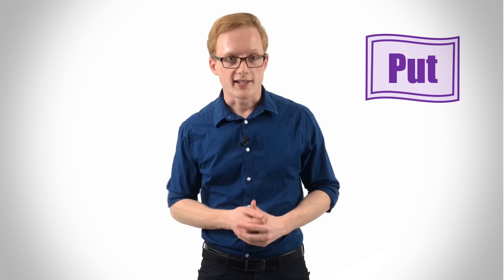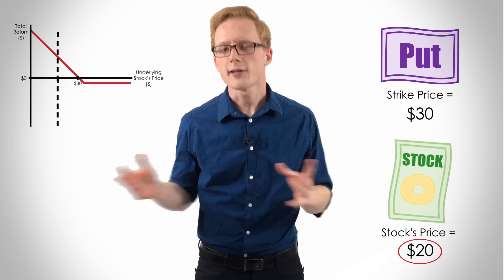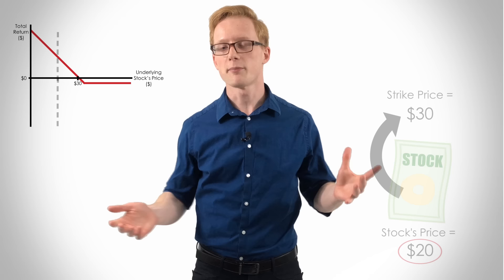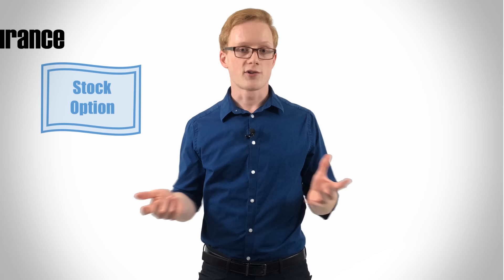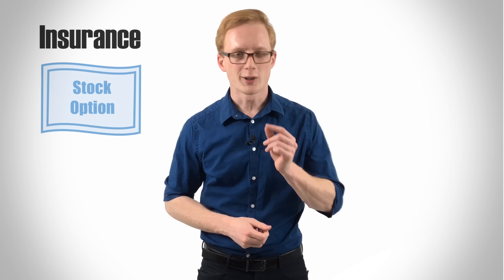Puts work in a similar manner, but since they entail the right to sell a security, the graph is actually flipped. If a stock's price falls below the strike price, you could buy a share at the lower market price and exercise the put to sell a share at the higher strike price, making a profit while again limiting your downside risk to just $2. As you can see, options can be used as a sort of insurance, limiting downside risk, while still allowing you to capitalize on a stock's expected movement. Pretty cool, isn't it?